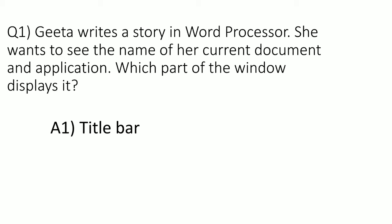First one: Gita writes a story in a word processor. She wants to see the name of her current document and application. Which part of the window displays it? Answer: Title bar. The title bar shows the name of her current document and application.